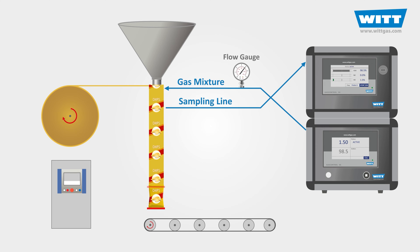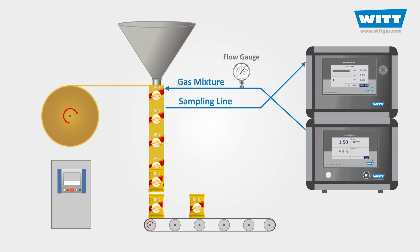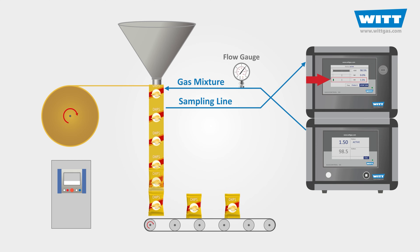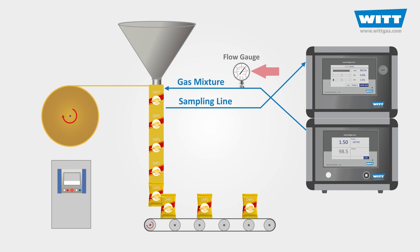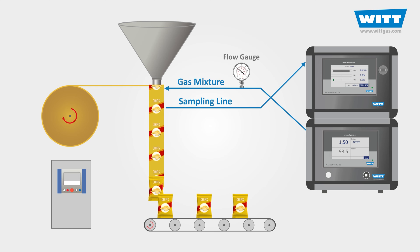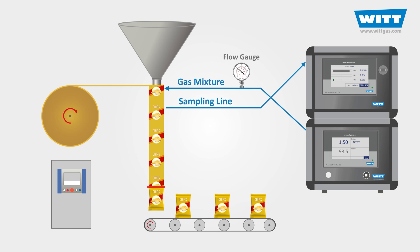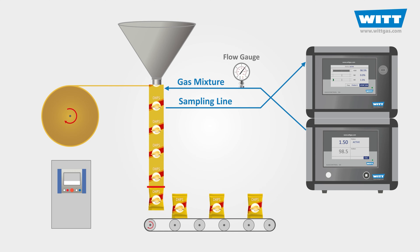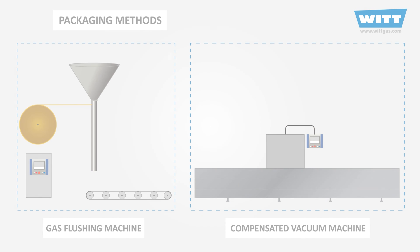By means of a lance, a sample is taken continuously from the pillow bag and analyzed. As long as the oxygen value is below the set limit value, the amount of supplied protective gas is reduced. If the oxygen content approaches the limit value, the protective gas quantity is automatically increased.